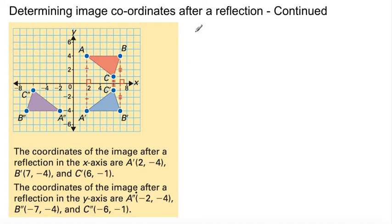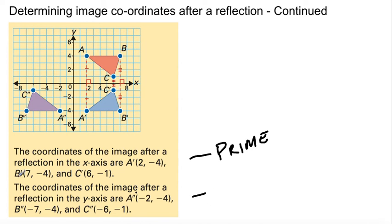So basically, what's happening here: the coordinates of the image after reflection in the x-axis are A prime (2, negative 4), B (7, negative 4), and C prime (6, negative 1). The important thing to notice is it is the same distance from the x-axis. It was on 4, now it's negative 4 — that's the opposite, so it's the same amount.